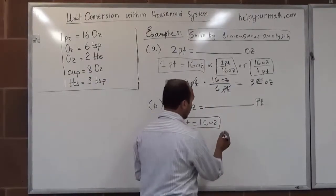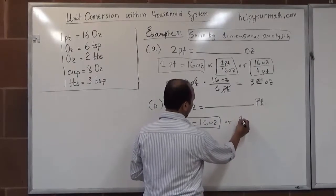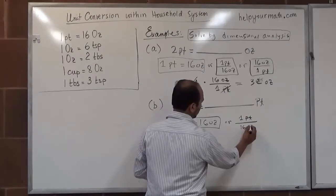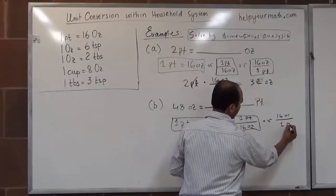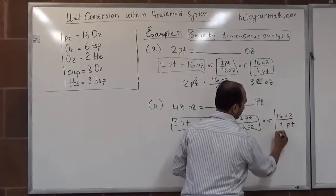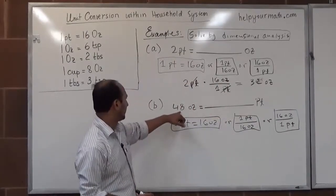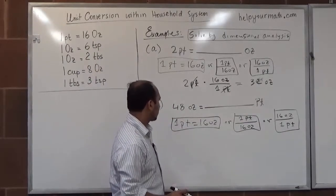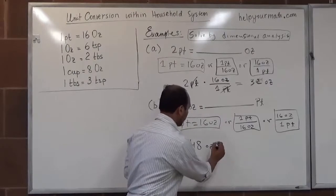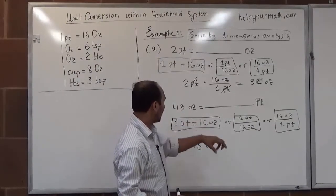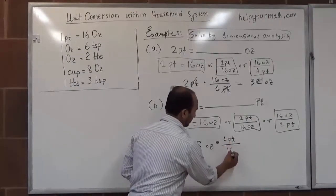Again, since we are applying dimensional analysis, we need to decide which factor to apply. We can rewrite the conversion as 1 pint over 16 ounces or 16 ounces over 1 pint. We have 48 ounces and we want to convert that into pints. So we start with 48 ounces times one of the factors — which one is the best fit? We want to go to pints, so it is going to be 1 pint over 16 ounces.